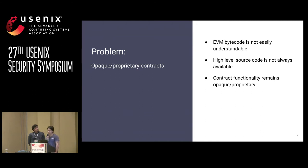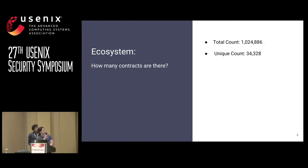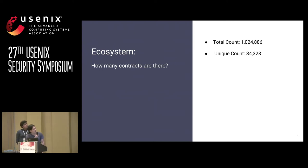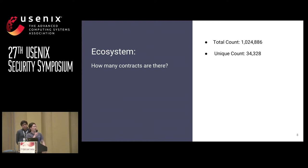The problem with opaque or proprietary contracts is that they are really hard to understand or audit. To have a better understanding of the ecosystem, we did some measurement. At our snapshot, we collected about a million contracts — there are about a million addresses that contain Ethereum smart contracts. However, if we look at the unique ones, we only found 34,000 unique contracts, and by unique we mean after swarm hash removed.